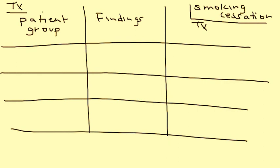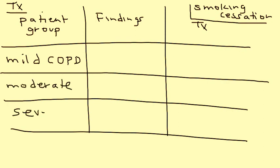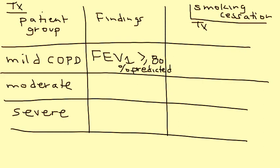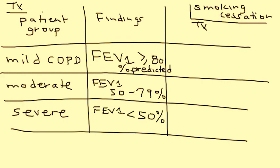Treatment is broken into three categories by patient group: mild, moderate, and severe COPD. The finding that characterizes each category is the FEV1. If FEV1 is greater than or equal to 80% of predicted value, it is mild. If FEV1 is between 50 and 79%, it is moderate. If FEV1 is less than 50%, it is considered severe.